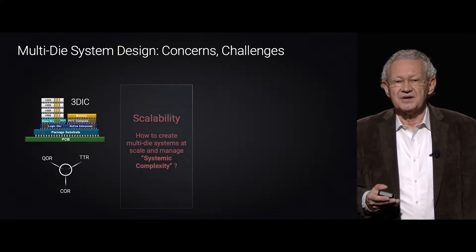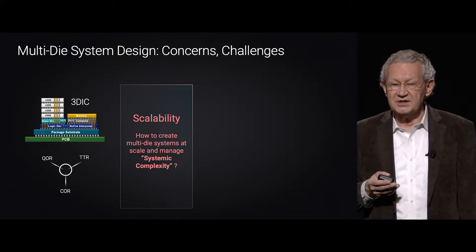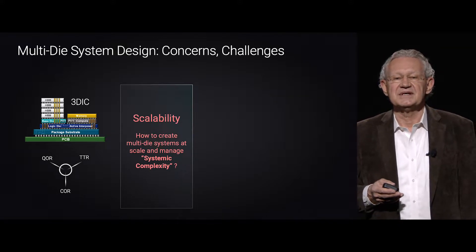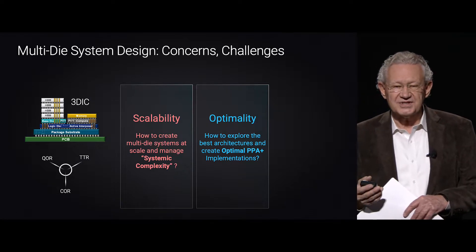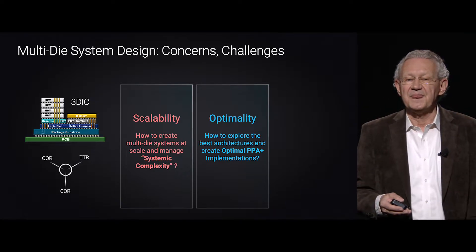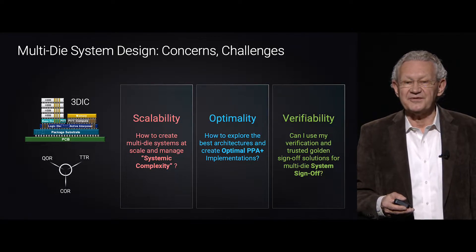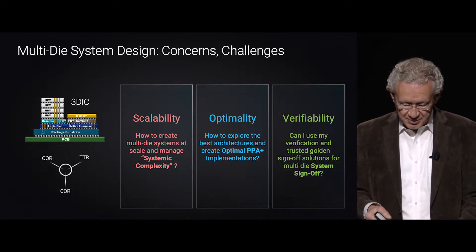Let's have a look at 3DIC. Whenever we talk to people about this, what immediately comes up are three questions. The first one is: how do we deal with the systemic complexity of this? That's a lot of chiplets. Secondly, how do we actually find optimal solutions among multiple chips in terms of PPA? And lastly, how do we verify with the tools that exist that this will actually work?